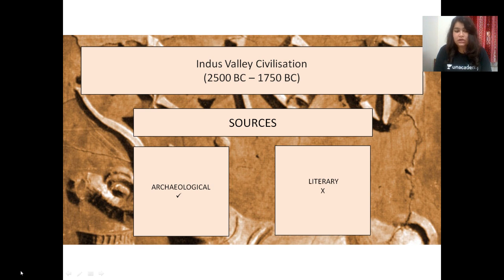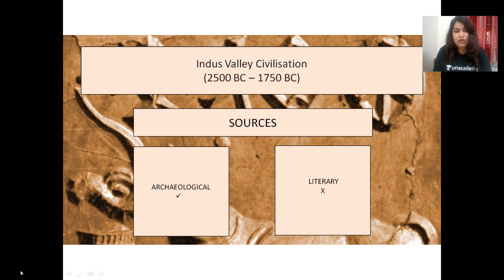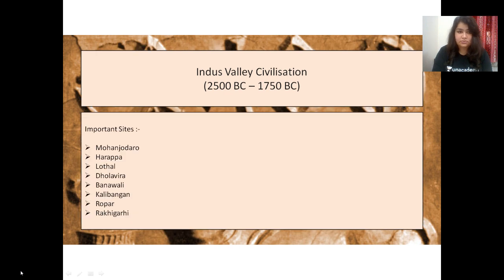There are two kinds of sources for the Indus Valley Civilization — archaeological and literary. Archaeological sources are abundant: we have granaries, seals, and much more. However, literary sources are not available because the script used has not been deciphered yet. So we rely entirely on archaeological sources. The civilization spanned from about 2500 BC to 1750 BC.